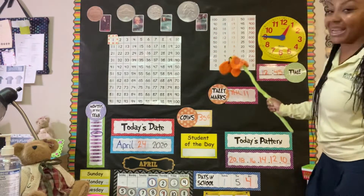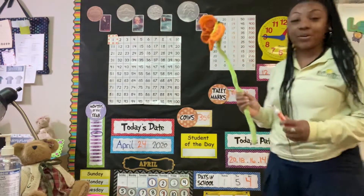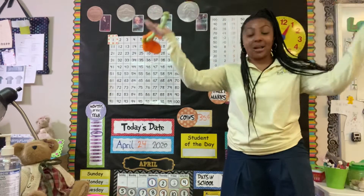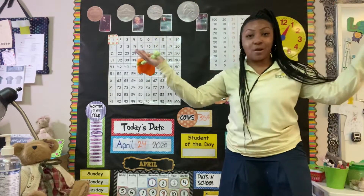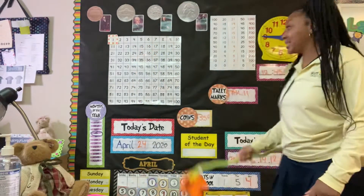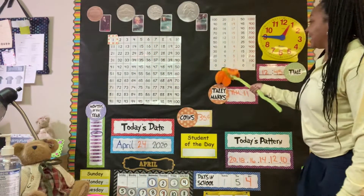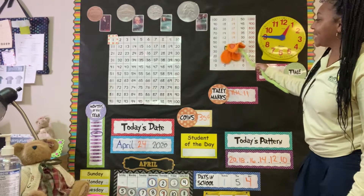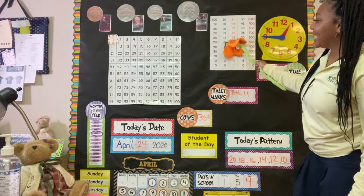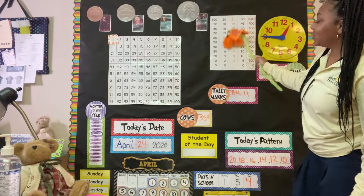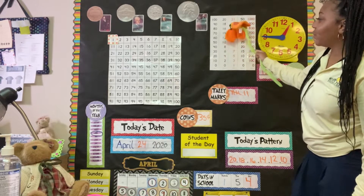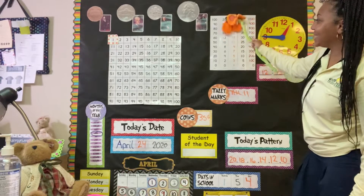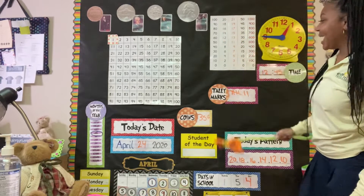Let's do our even numbers. Remember, even numbers are numbers that balance out equally on both sides. Ready? 0, 2, 4, 6, 8, 10, 12, 14, 16, 18, 20.